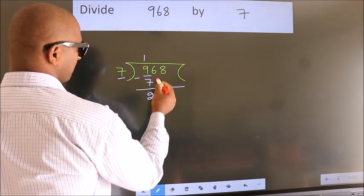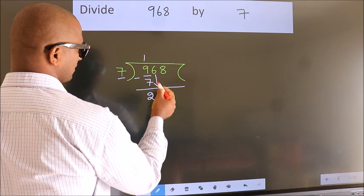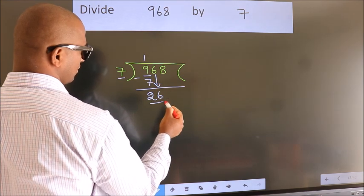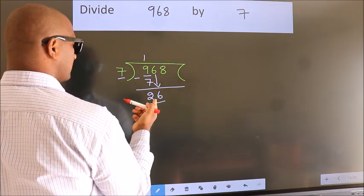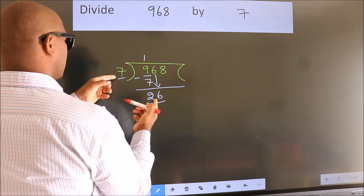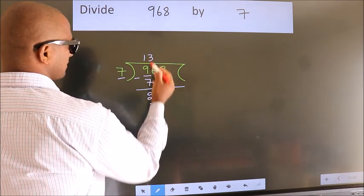After this, bring down the beside number. So 6 down, making 26. A number close to 26 in the 7 table is 7 threes, which is 21.